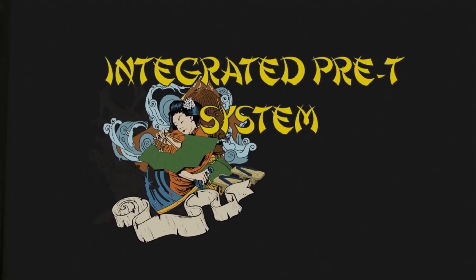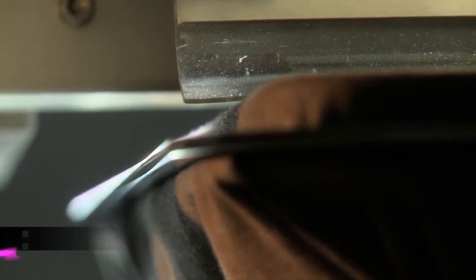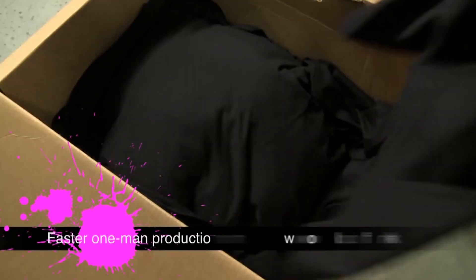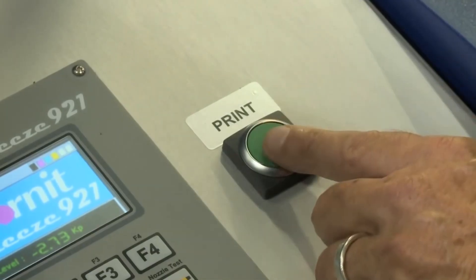Cornete's cost-cutting integrated pre-treatment system enables faster workflow and production times without the need for external pre-treatment of any kind. Simply pick up a garment out of the box, slide it on the pallet, and press the print button.